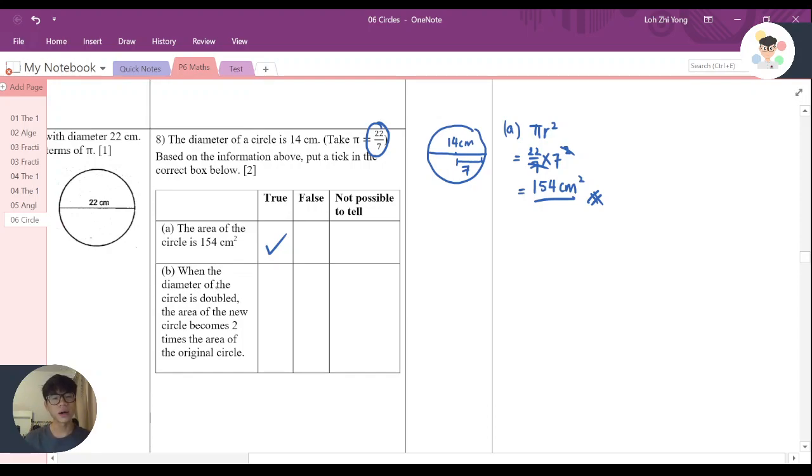Part B says: when the diameter of the circle is doubled, the area of the new circle becomes 2 times the area of the original circle. Now, basically if the diameter is doubled, means that in another case, for example, this is the line.